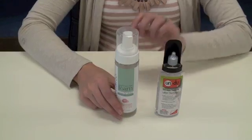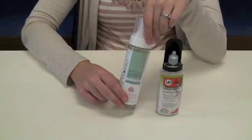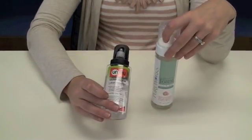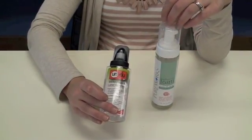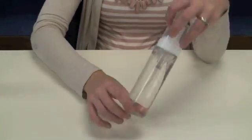The first step you are going to do is you are going to take your soap dispenser and remove any labels that are on the outside. To help do this you can use this Undo which is a sticker, tape and label remover to help get any remaining residue off. Here I have one that I have already peeled off and cleaned.